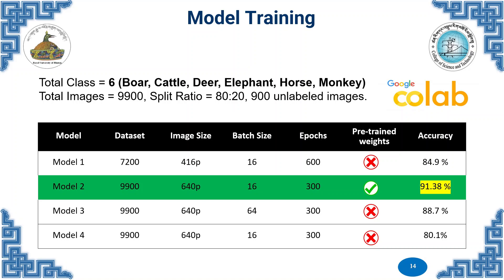For model training, we have six classes: bird, cattle, deer, elephant, horse, and monkey. A total of 9,900 images were split in an 80:20 ratio, with 900 unlabelled images. A total of four models were trained on different parameters. However, Model 2, trained on pretrained weights, gave the highest accuracy of 91.38 percent, and was therefore selected as the object detection model for our project.